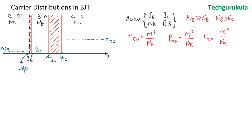As the emitter junction is forward biased, electrons from the base side get injected into the emitter side. As they diffuse through the emitter, the carrier concentration decreases. Assuming the emitter length is greater than the diffusion length of electrons in the emitter, the carrier concentration profile changes exponentially.